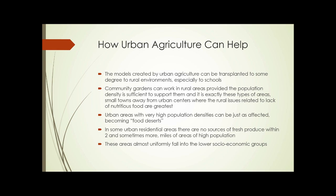So how can urban agriculture help? The models created by urban agriculture can be transplanted to some degree to rural environments and especially to schools. Community gardens can work in rural areas, provided the population density is sufficient to support them. It is exactly these types of areas — small towns away from urban centers — where the rural issues related to lack of nutritious food are greatest. Urban areas with very high population densities can be just as affected, becoming food deserts where there are no sources of fresh produce within two or more miles, almost uniformly falling into the lower socioeconomic groups.